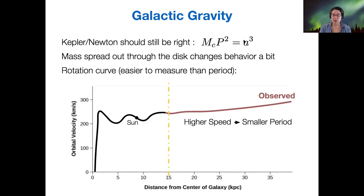So higher speed means a smaller period. These distances aren't changing. So if the period is smaller, then the mass has to be bigger. That means there must be more mass than expected in the galaxy, in the galactic disk somewhere.